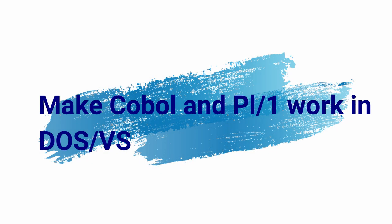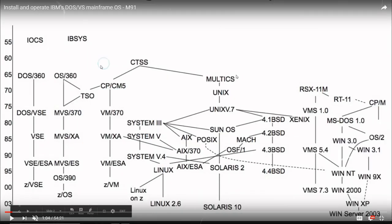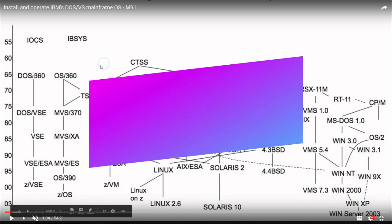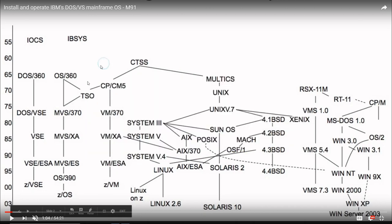Hello everybody and welcome back to the Moshex Mainframe channel. This is Moshex, and if you remember in the previous video we had the guest speaker Professor Renaud Ferland from Montreal. This is the video we produced together - mostly him, 90% of the work was by him - where he showed how to install and operate DOS VSE, which is this lineage of operating systems running in parallel to MVS, OS/390, and z/OS. The other third parallel on the mainframe would be VM, then VMXA, VMESA, and CMS.